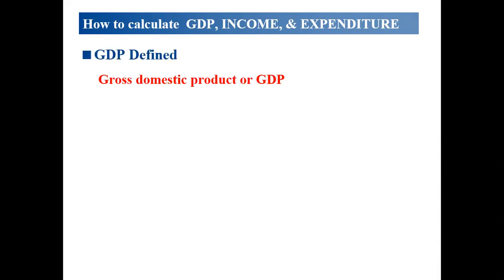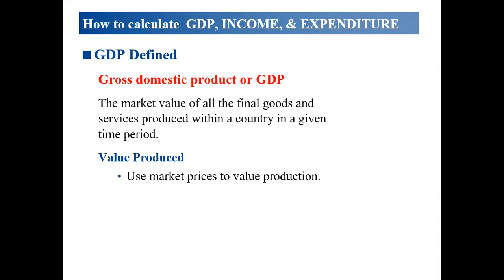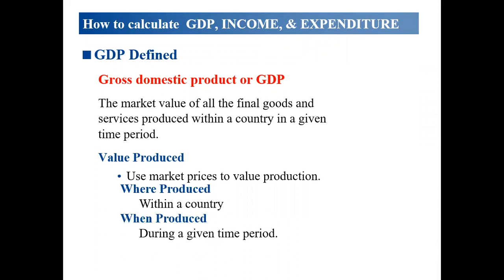But what is the GDP? GDP represents gross domestic product — the market value of all the country's production inside its borders within a given time. We produce products using market prices, produced within a country, during a given period of time.